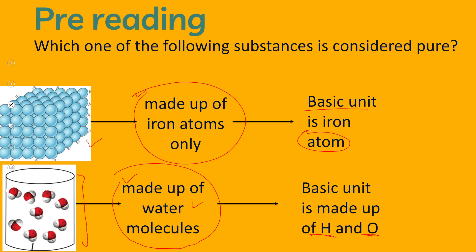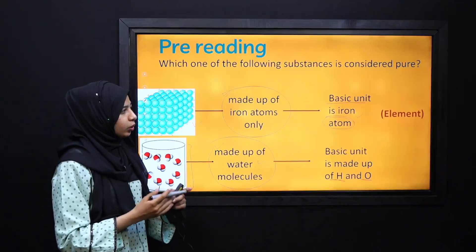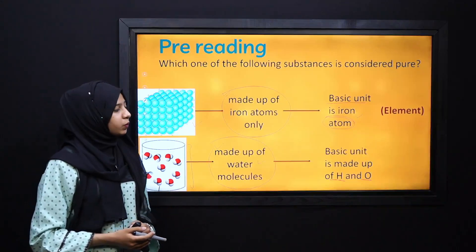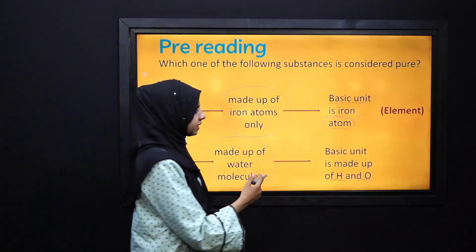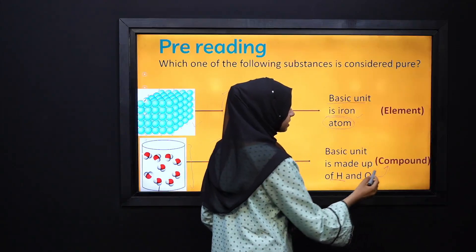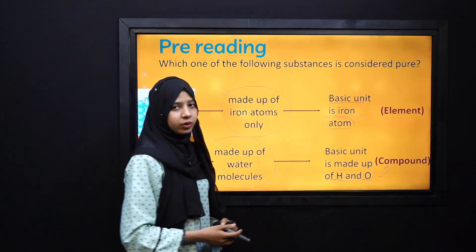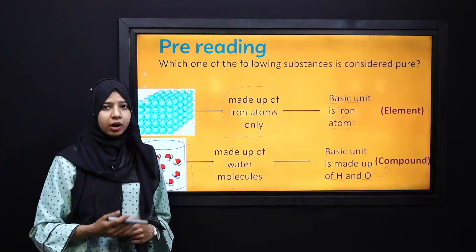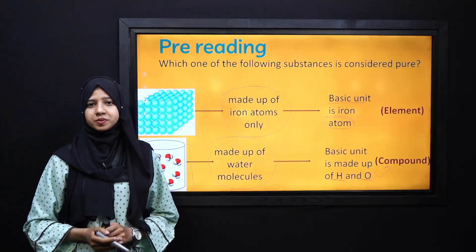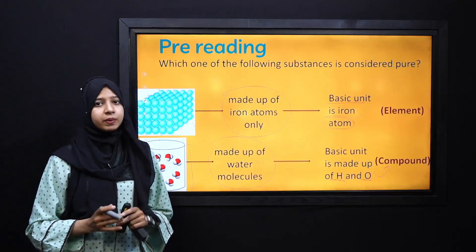This substance whose smallest unit is a single type of atom — we call it an element. Whereas in this case, where the smallest unit consists of different types of atoms, we name this term as compound. So we have both pure substances — elements and compounds.